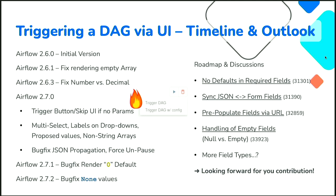When the scheduler triggers the DAG, the default parameters are not printed in the UI — they're just applied behind the scenes. This would of course be improved in future work.